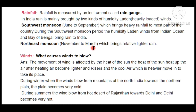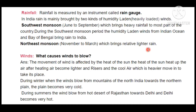The Northeast Monsoon runs from November to March and brings very little rain. In the northeast, there are not many large water bodies, so the winds from that direction carry very little humidity. As a result, the winds coming from the northeast do not bring very heavy rainfall — only very light rain.